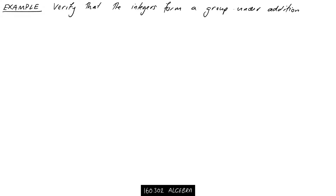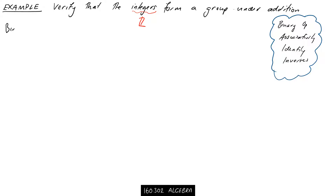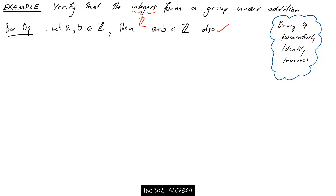Let's see how this works on an example we understand well. We want to verify that the integers form a group under addition. First we need to verify that addition is a binary operation — that means if I take two integers A and B and add them together, I'll get another integer back. So: let A and B be integers, then A plus B is also an integer. We can give that a big tick.